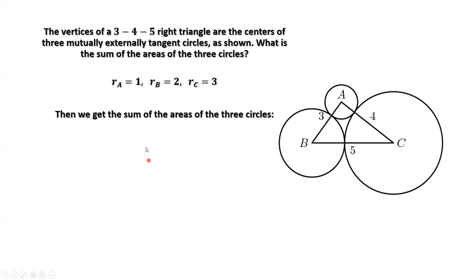Now we are ready to calculate the sum of the areas of these three circles. Based on the area formula of a circle, we have pi RA squared plus pi RB squared plus pi RC squared.